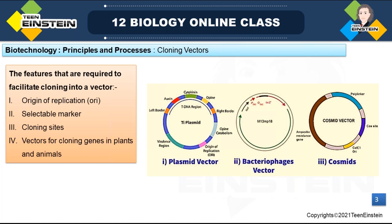Origin of replication is a sequence where replication starts — it is the starting point of the replication work. From that sequence only, replication begins. In this plasmid vector, you can see origin of replication marked here. When any DNA is linked to this origin of replication sequence, that piece of DNA will start to replicate.